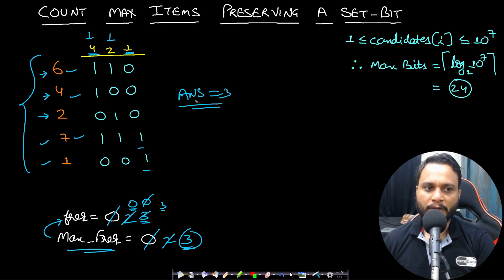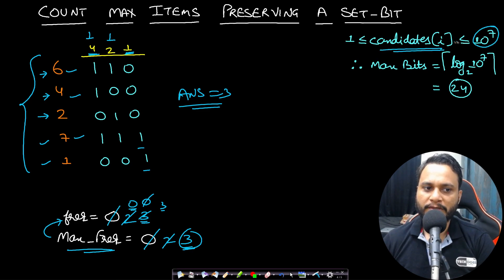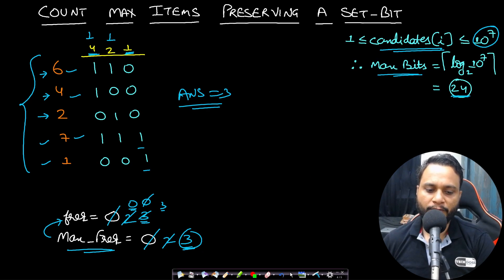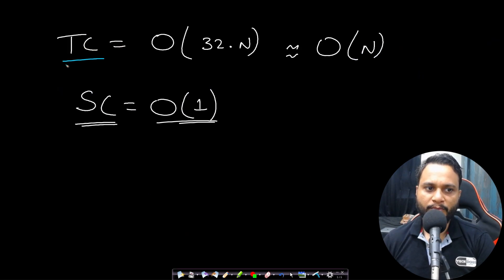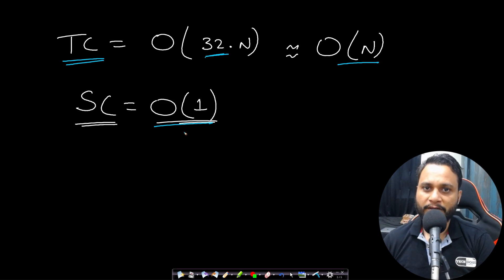How many bits do we need to check? Since candidates values are at most 10^7, the maximum bits required is ceil(log2(10^7)) which is 24 bits, but we can safely use 32 bits. The time complexity is O(32 × n), and since 32 is a constant, this simplifies to O(n). Space complexity is O(1).